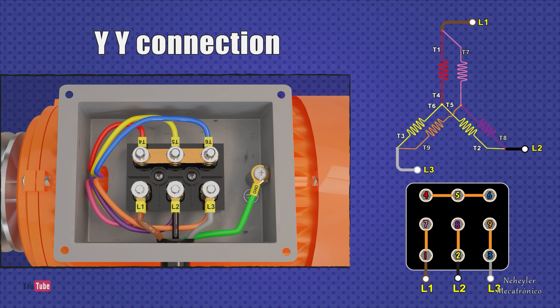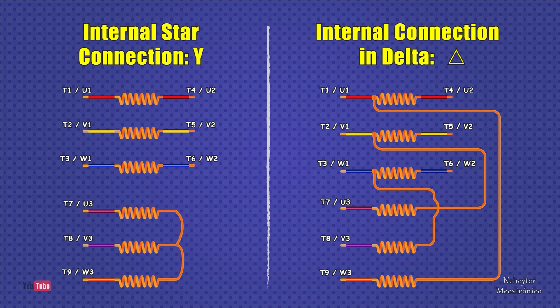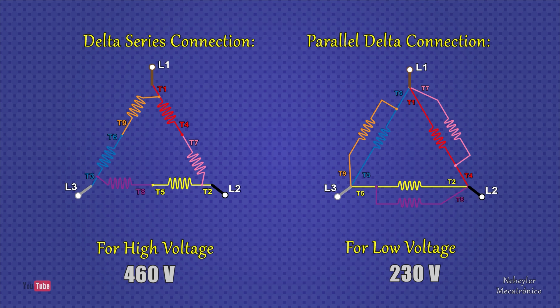So these two star type configurations that you just saw are used in medium and low power electric motors. If the electric motor is internally connected three of its terminals in delta or triangle, then the following types of connection can be made on its external terminals: series delta type connection for high voltage and parallel delta type connection for low voltage.